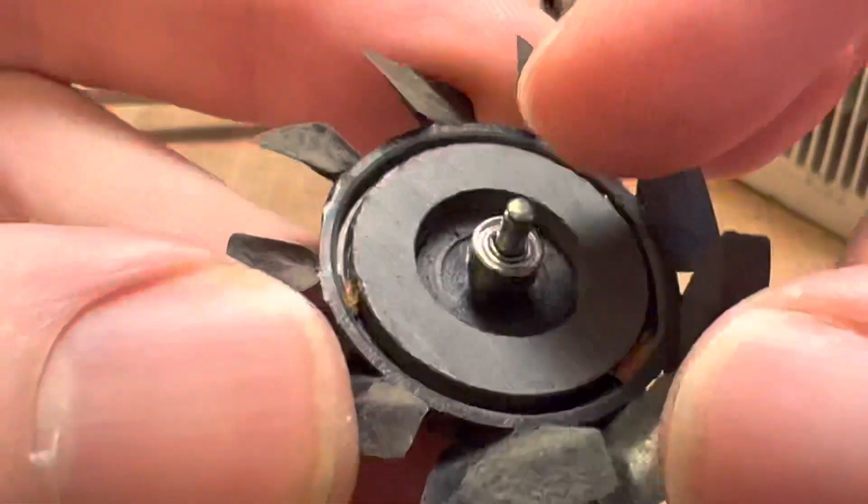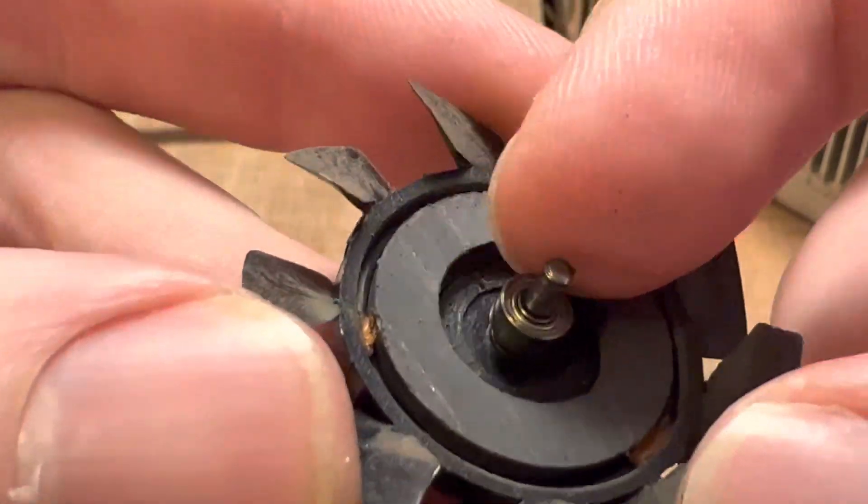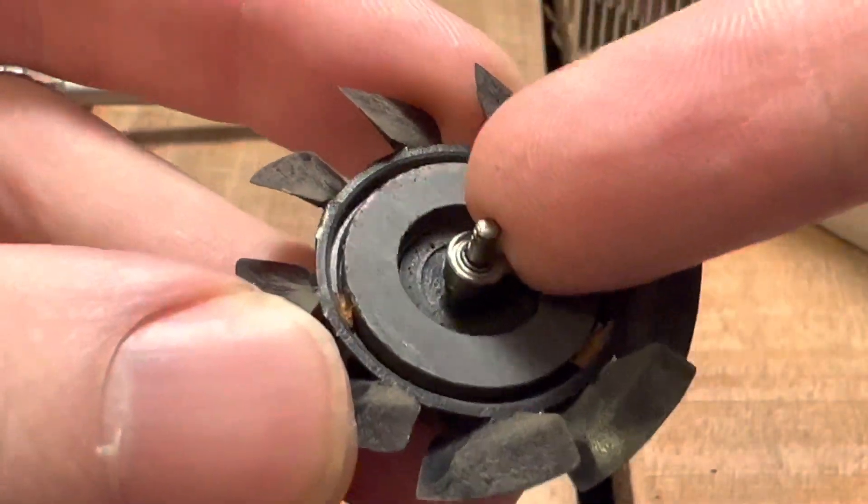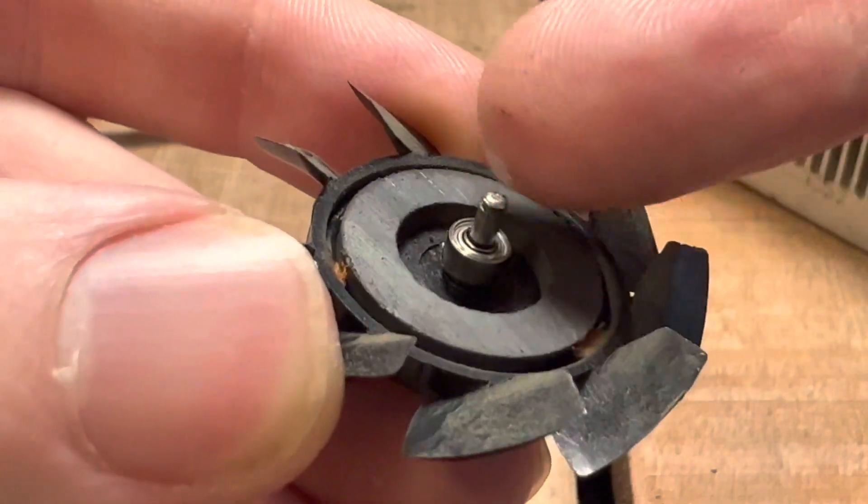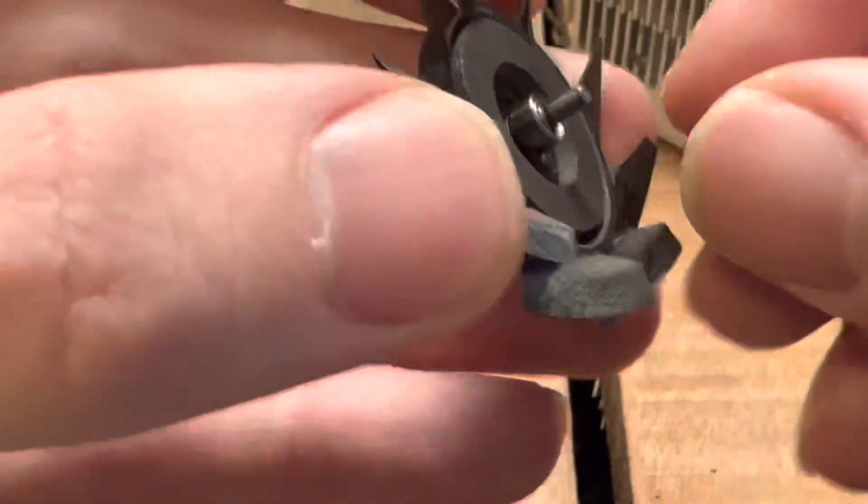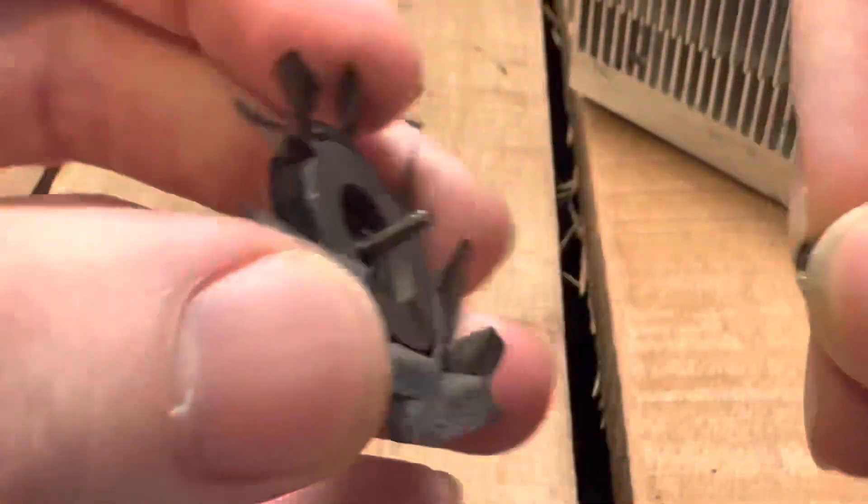The bearing actually sits in that hole in the middle, and then that cartridge there is the actual bearing cartridge. You should be able to see me rotating that now. You can pull that off.